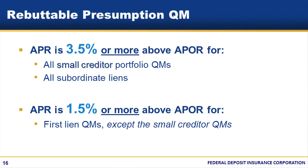First lien loans originated by small creditors, and any subordinate lien loan with an APR of 3.5% or more above APOR, are rebuttable presumption QMs. First lien QMs originated by creditors other than small creditors have a rebuttable presumption if the APR is 1.5% or more above APOR.